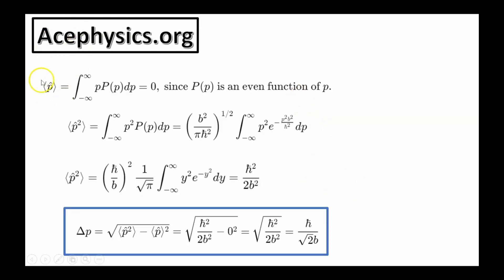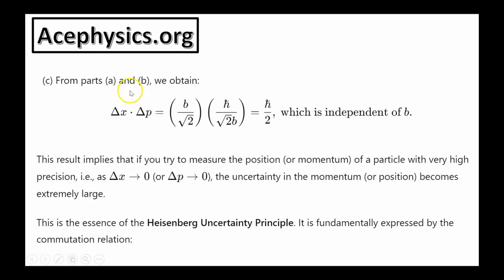Part D asks us to find the average value of momentum and the average value of momentum squared. This calculation is analogous to what we did for x, but now we use the momentum basis wave function. We could use the position basis wave function, where the momentum operator is minus i h-bar d by dx, but in the momentum basis the momentum operator is simply multiplication by p. When we do the integrals, the average value of momentum equals zero, and the average value of momentum squared equals h-bar squared over 2b squared. This tells us the uncertainty in p is h-bar over the square root of 2 multiplied by b. I recommend computing these integrals yourself — it's good to know how to do them.